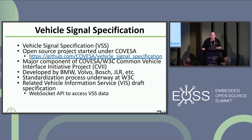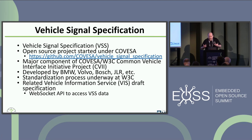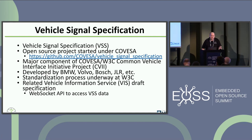I suspect in this audience most people would not have heard of Vehicle Signal Specification. It's a sort of up-and-coming specification for vehicle signals. It comes out of Covesa, and it's a big component of their SDV working project — BMW, Volvo, Bosch, and a bunch of different companies. What caught our eye is that it's actually undergoing standardization with the W3C, which blows it up to an industry-level thing. There's also an API spec called VIS, Vehicle Information Service, that's also going through W3C standardization.